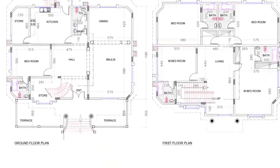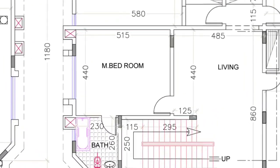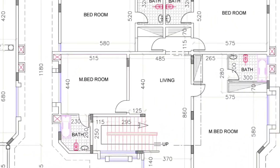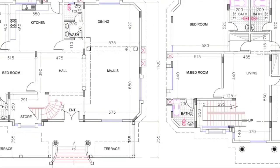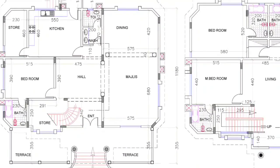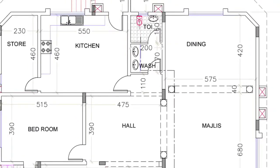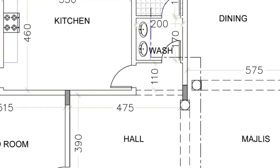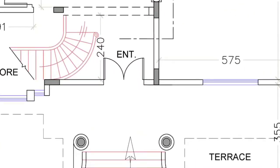We will see this wonderful floor plan — first floor and ground floor. On the first floor we have four bedrooms with all attached bathrooms and one living area. On the ground floor we have a majlis area, hall, one bedroom for guests, kitchen, store, and dining. We will see this wonderful plan one by one.